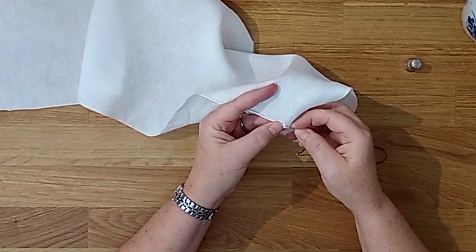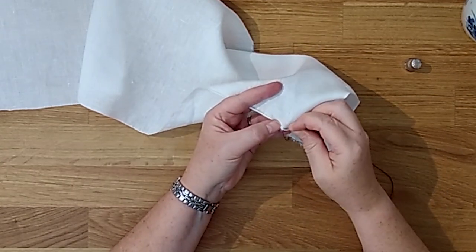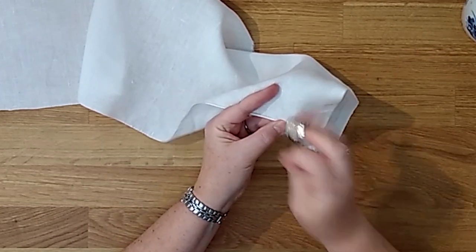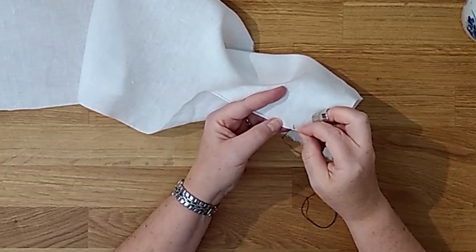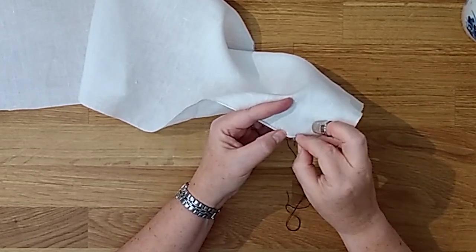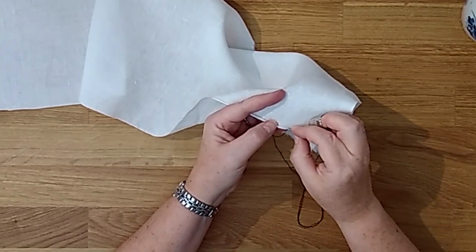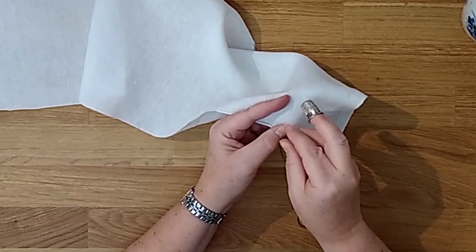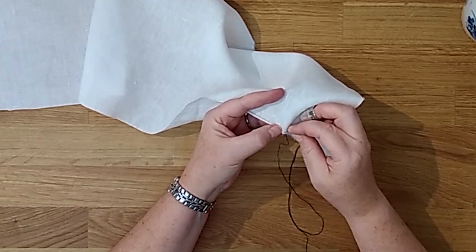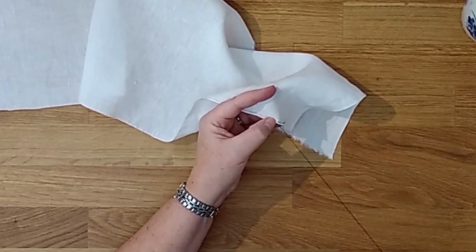And I usually start by burying that knot, and then you are literally doing a standard stitch. Oh thimble, don't forget the thimble. Take care with the finger, the hand that is holding your rolled edge to not crush that lovely roll that you have created.